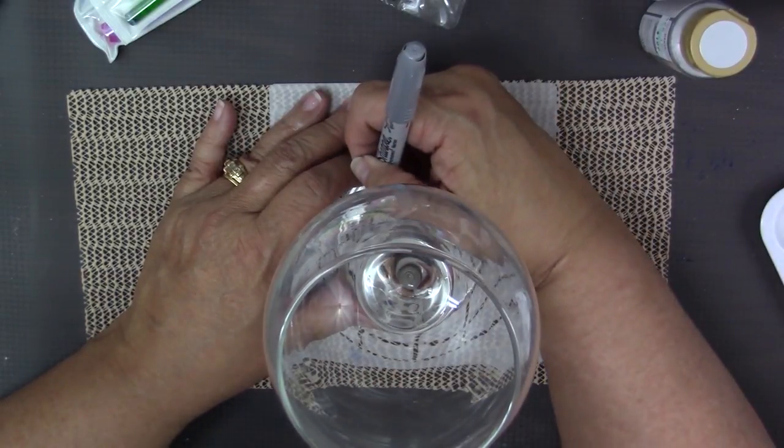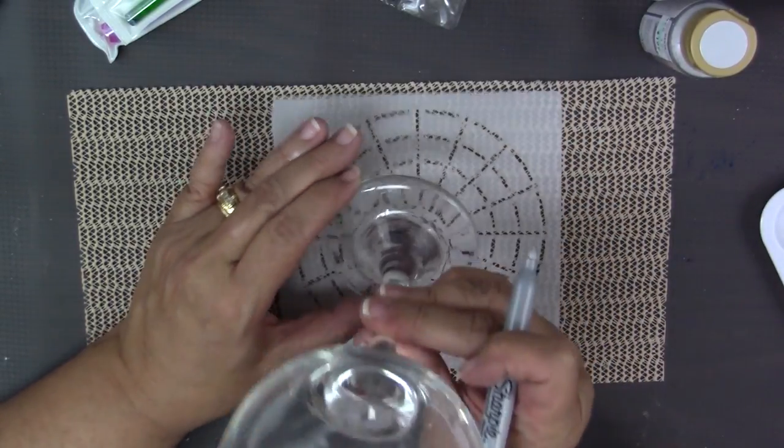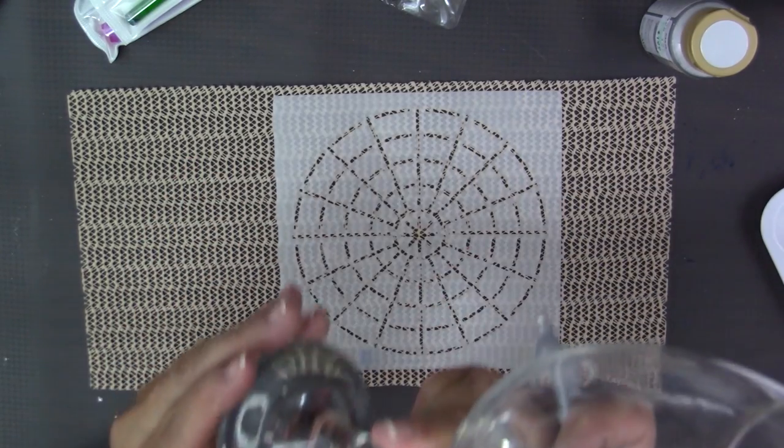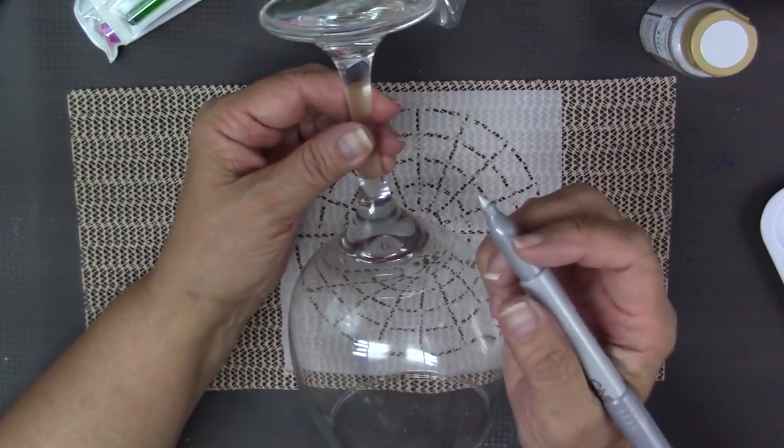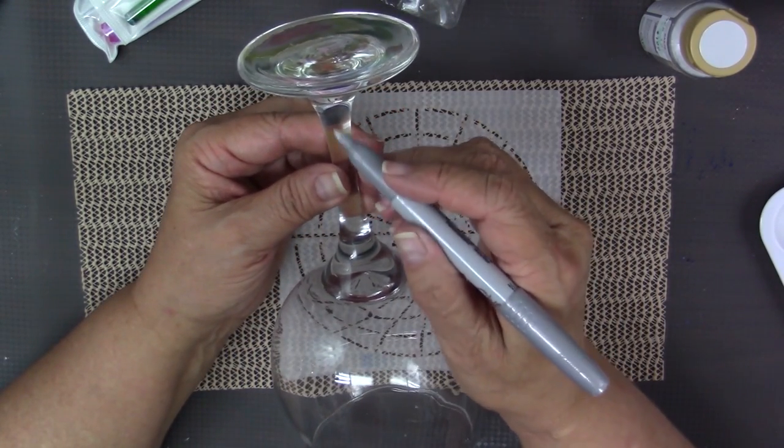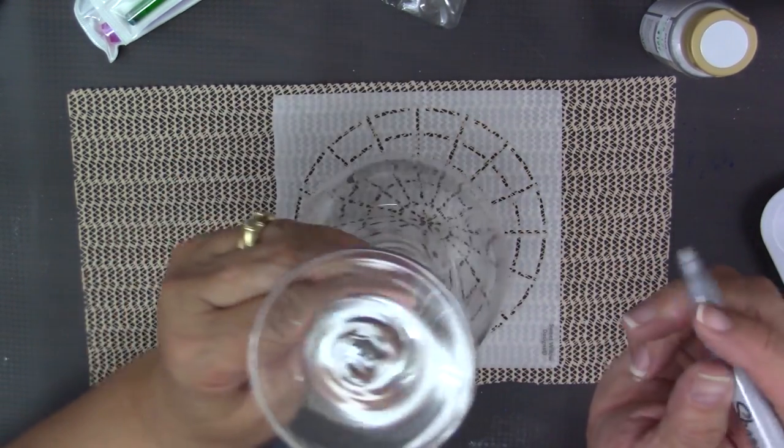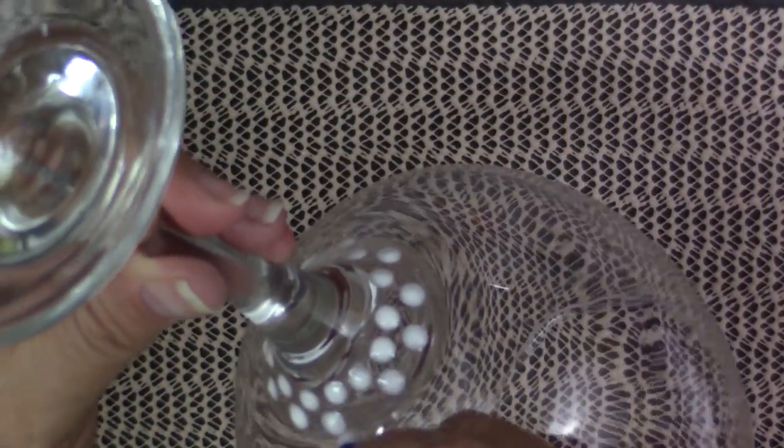One thing I want to tell you about making the mark. Make sure that your marks, you're not painting over your marks, because those actually will show through. That Sharpie will show through on the underside of the glass. So make sure you're doing a little bit above where you want to start painting.